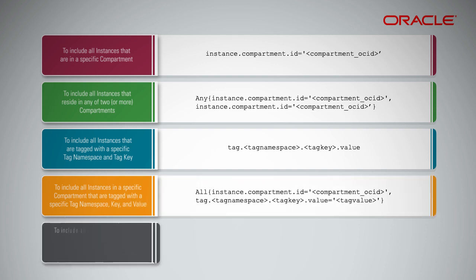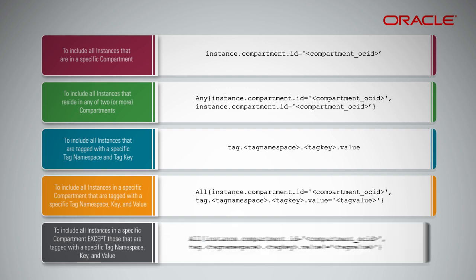To include all instances in a specific compartment except those that are tagged with a specific tag namespace, key, and value, add a rule with the following syntax.